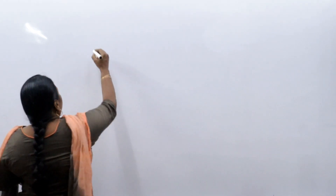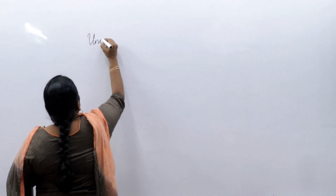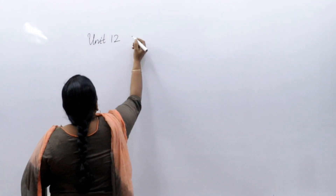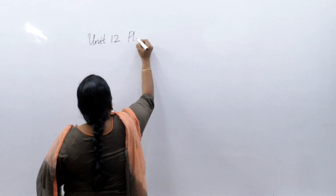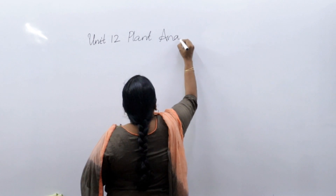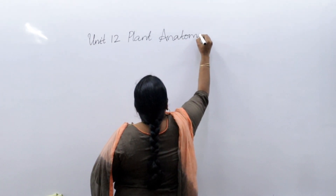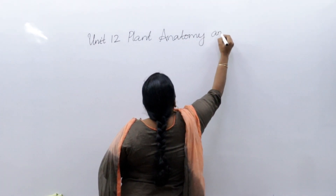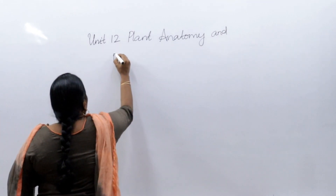Hi all, happy day and warm greetings to everyone watching this video. In this video we will go ahead studying about standard 10 Samacheer Kalvi unit 12: Plant Anatomy and Plant Physiology. Unit 12 is where the biology starts — plant anatomy and plant physiology.